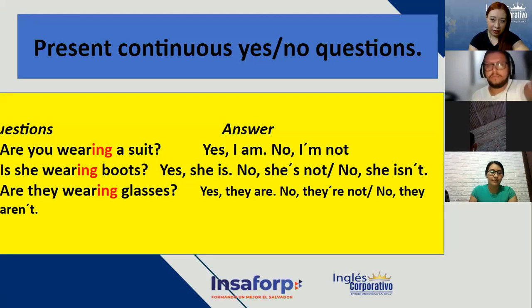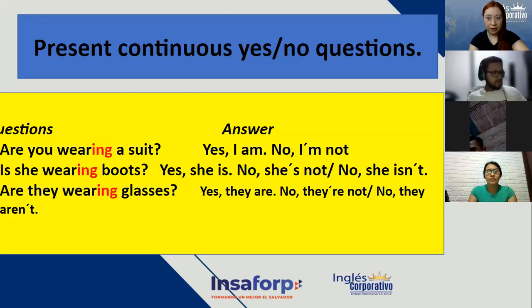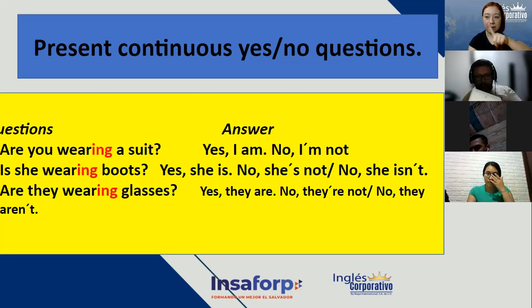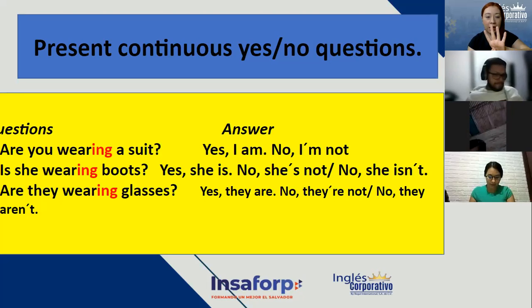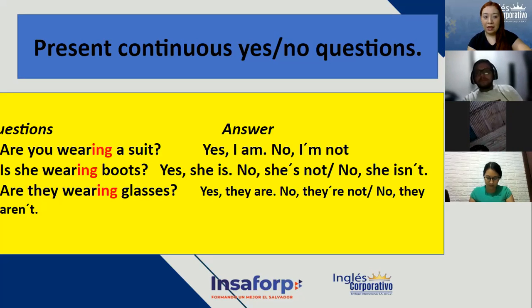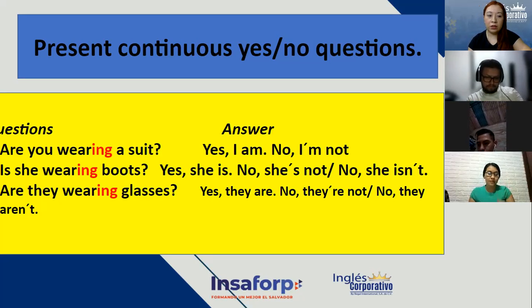What about this week? We were talking about a new grammar topic — esta semana iniciamos un nuevo tema gramatical que era present continuous. We have four scenarios: affirmative sentences, negative sentences, yes or no questions, and information questions. Tenemos cuatro escenarios. La semana pasada vimos oraciones afirmativas, oraciones negativas, y preguntas de yes or no.